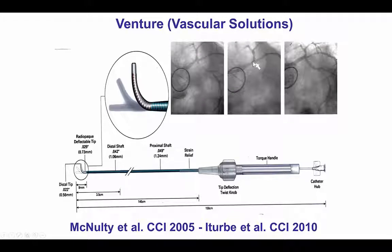Having a microcatheter that is angled and can provide good support can be extremely useful in recanalizing these occlusions. One such catheter has traditionally been the Venture catheter, which has a deflection knob on the proximal part. When clockwise rotation is performed, the tip can bend up to 90 degrees. It is also a fairly stiff microcatheter that provides very strong support.